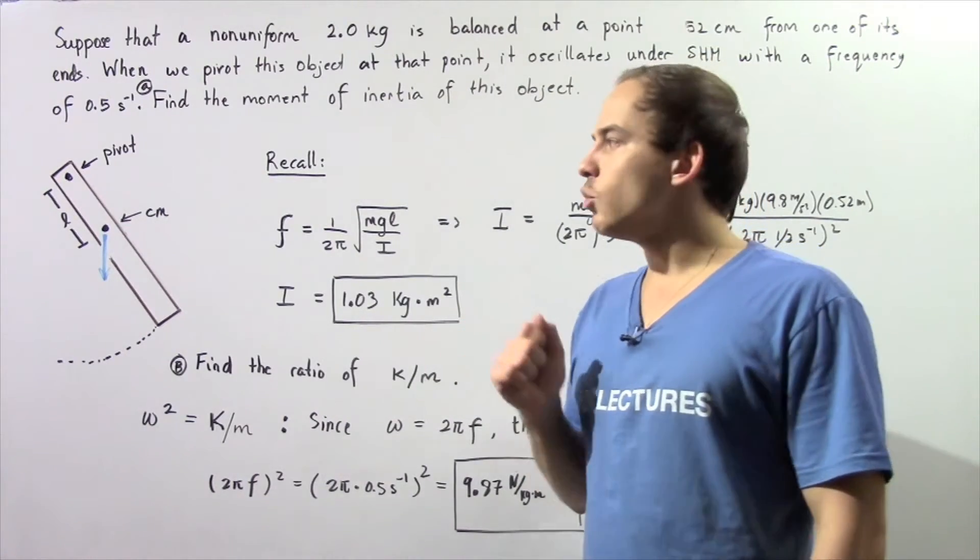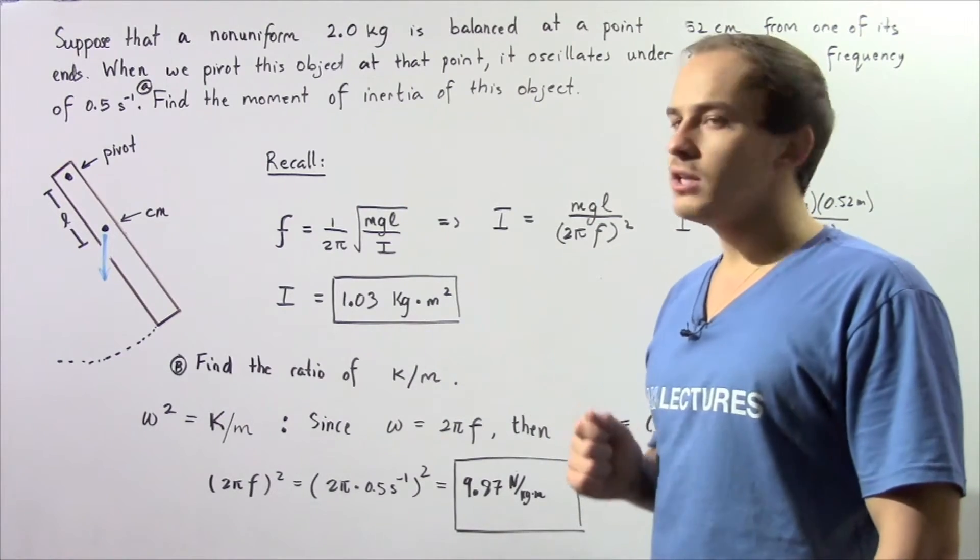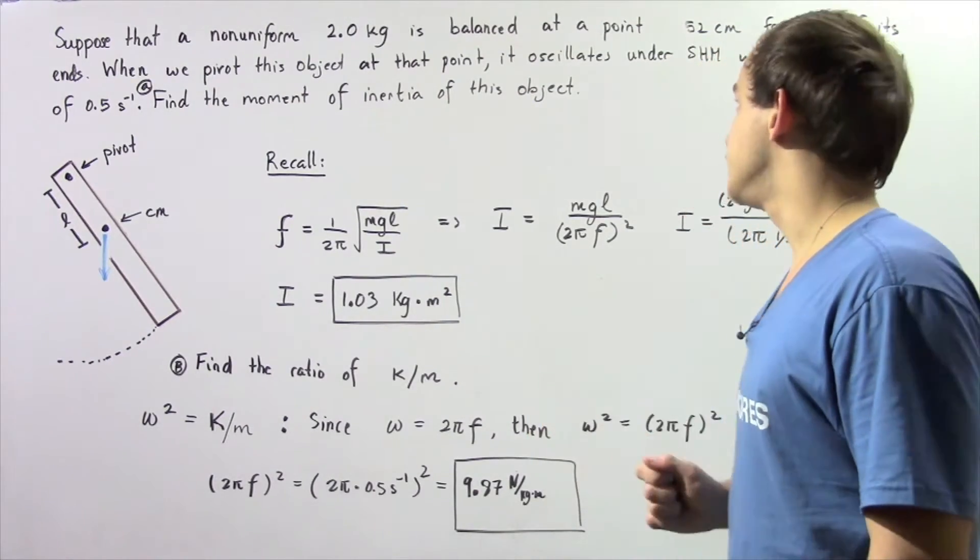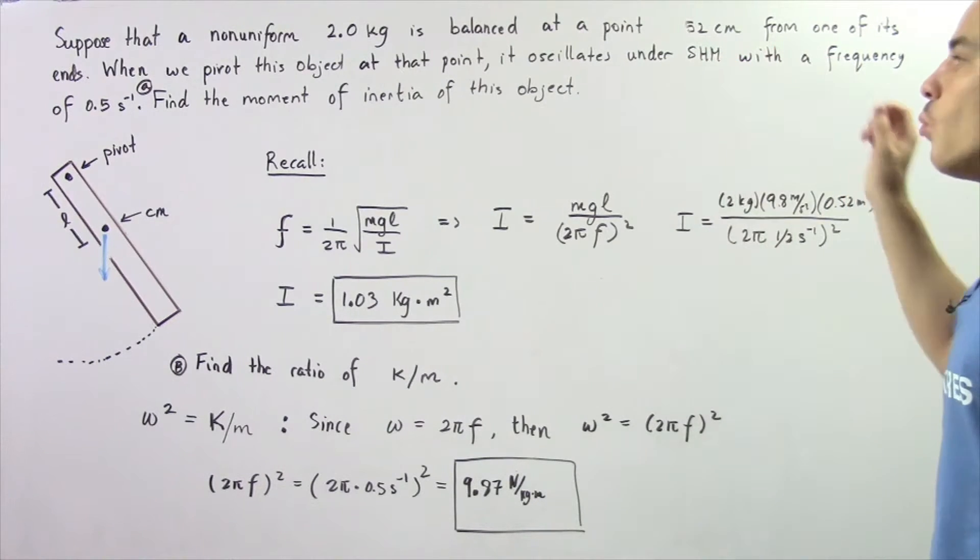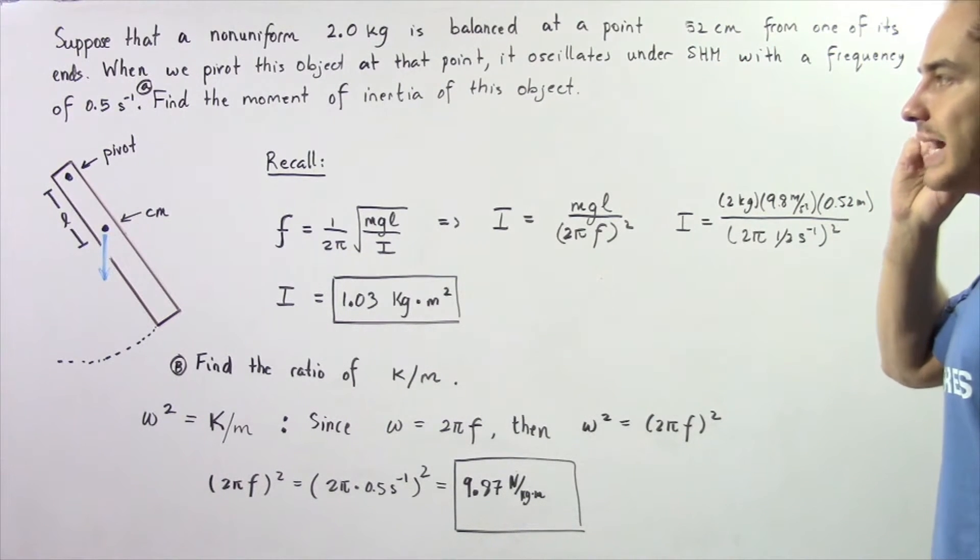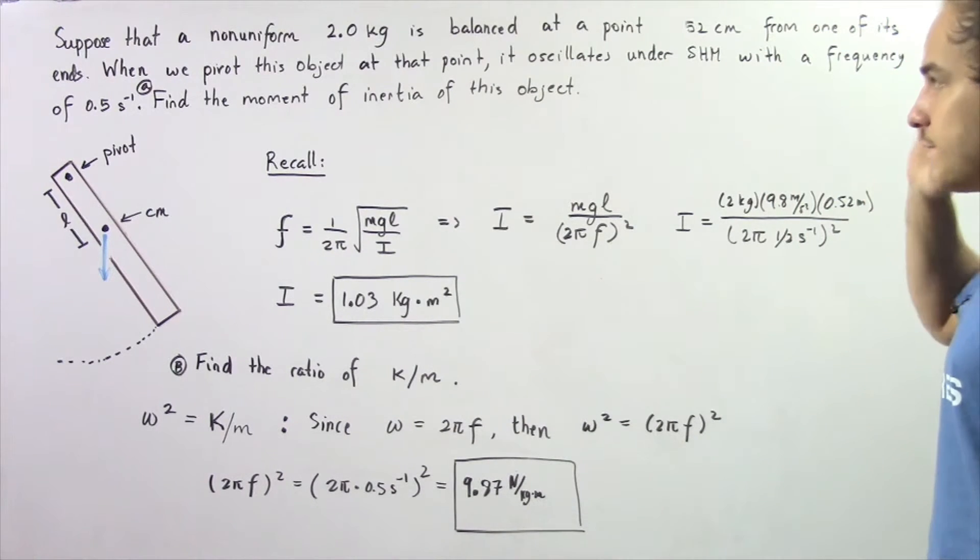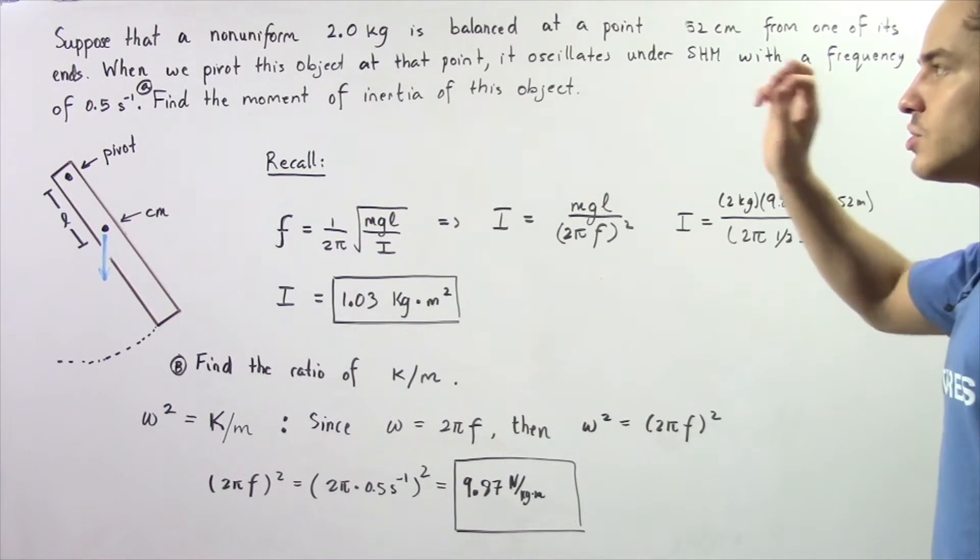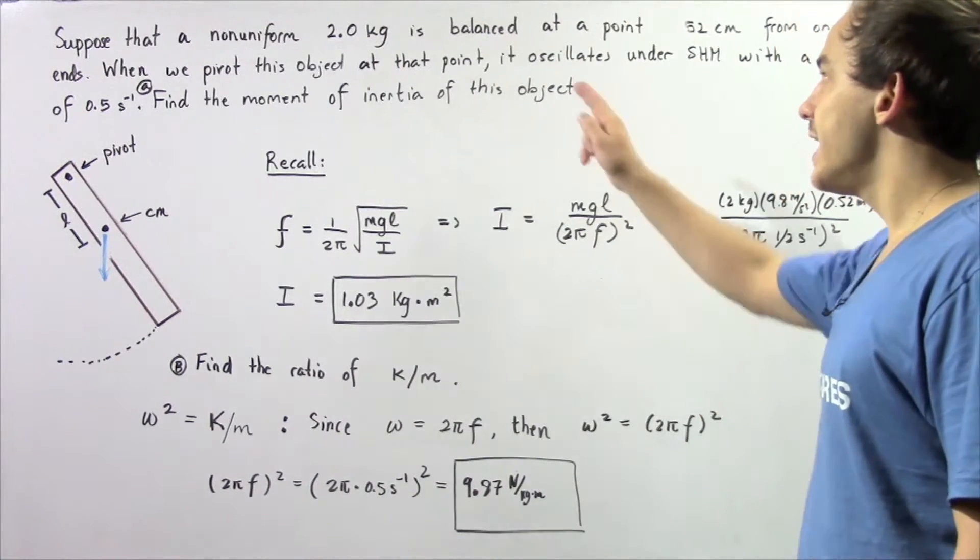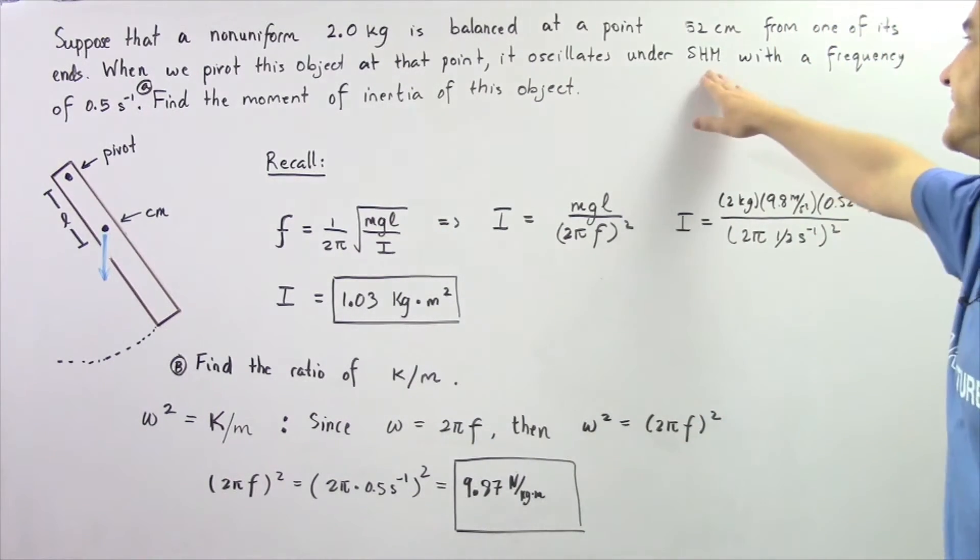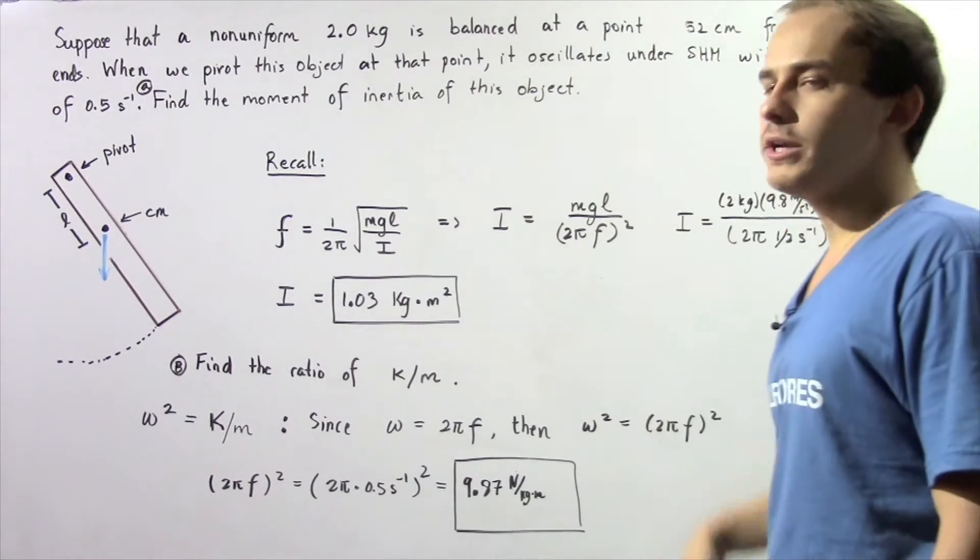Let's examine the following example. Suppose that a non-uniform 2 kg object is balanced at a point 52 cm from one of its ends. So that means the center of mass from one of its ends is 52 cm. When we pivot this object at that point, it oscillates under simple harmonic motion with a frequency of 0.5 Hz.